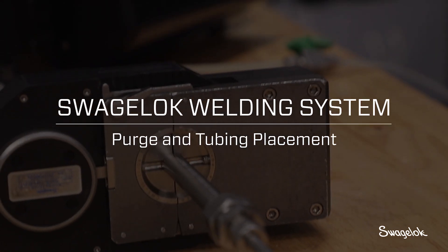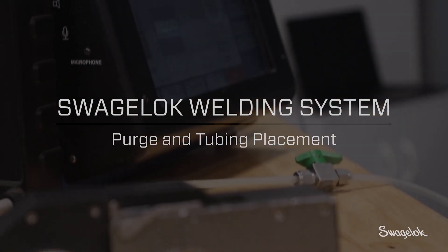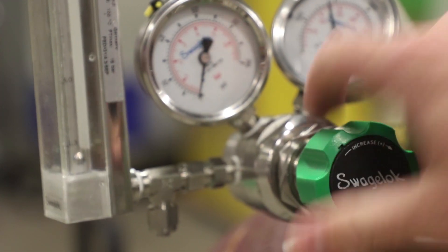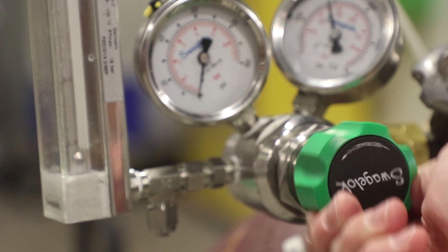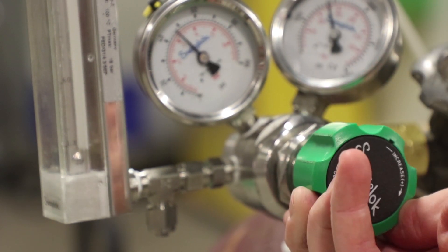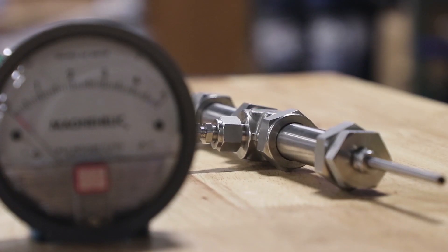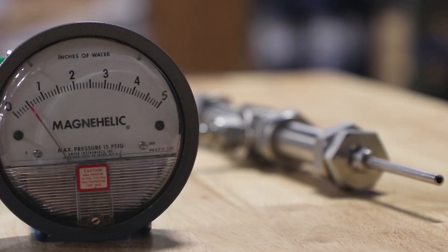When using the M200, supplying inert purge gas through the ID and OD of the tubing is really important. Flow and pressure through the inside of the piece helps support the weld bead and keep it clean. We use a pressure regulator to drop the bottle pressure down to an acceptable level, then we use a flow meter to set a desired flow through the inside of the piece. And we use a mag-helic pressure gauge to check that pressure inside of the piece before we make a weld.